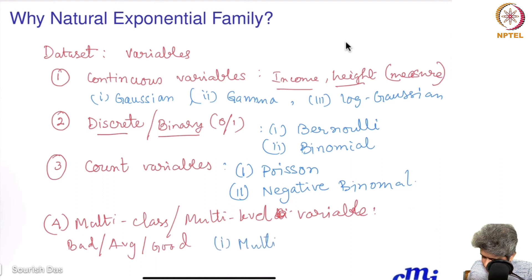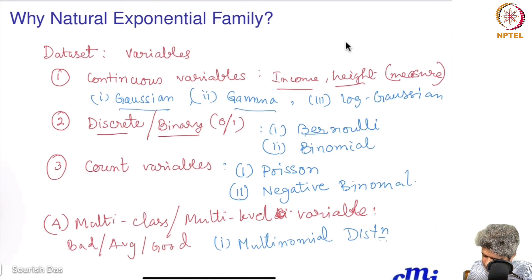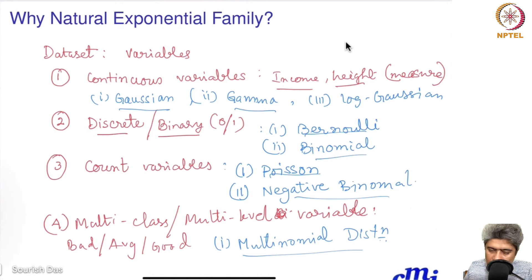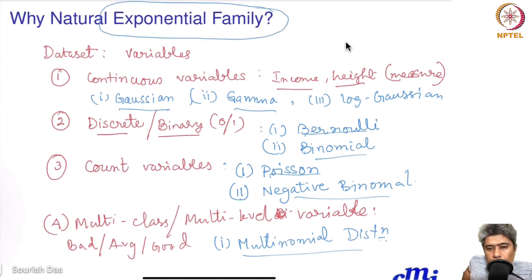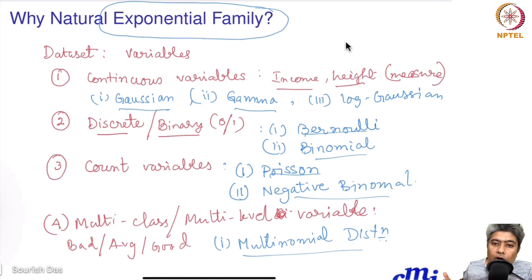For multi-level variables, we use the Multinomial distribution. Now, all these distributions — Gaussian, Gamma, Bernoulli, Binomial, Poisson, Negative Binomial, and Multinomial — all fall within the big family called the Exponential Class. If we build a predictive model for the exponential class of family, then all other models become special cases, which is where the Natural Exponential Family plays a crucial role.